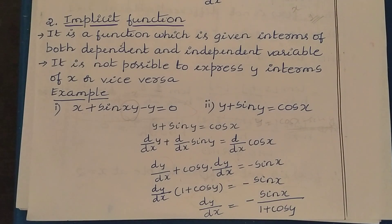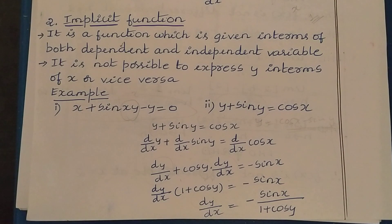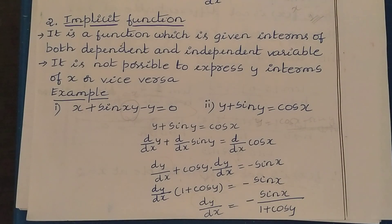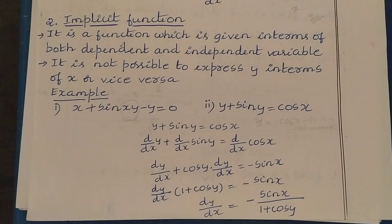This is about implicit and explicit functions and how you can find the derivative of an implicit function. In explicit functions, we can express one variable in terms of another, whereas in implicit functions we cannot — the function is given in terms of both dependent and independent variable. If you like this video, please like and subscribe, and click the bell icon to get regular notifications. Thanks for watching.